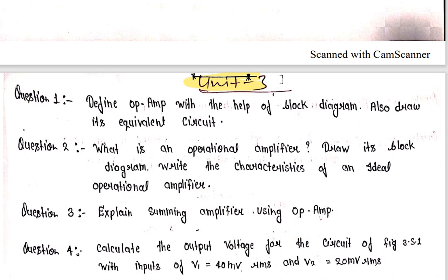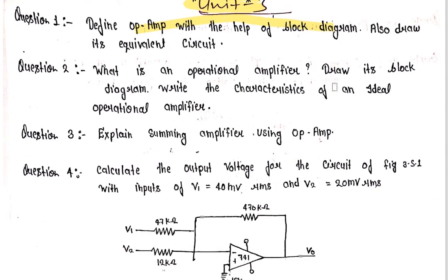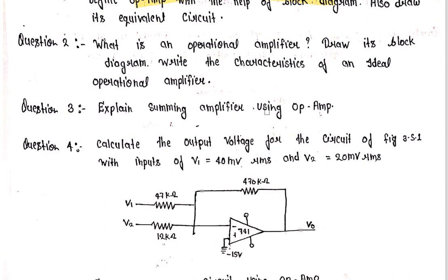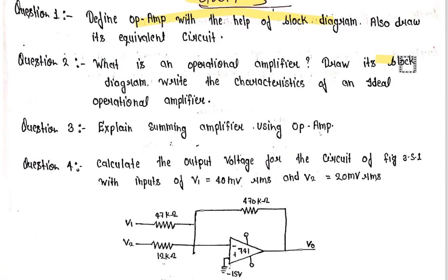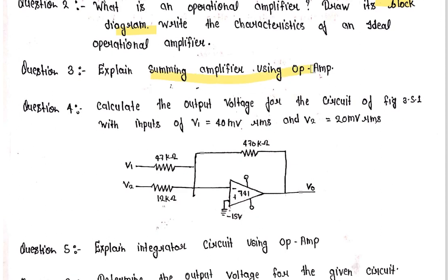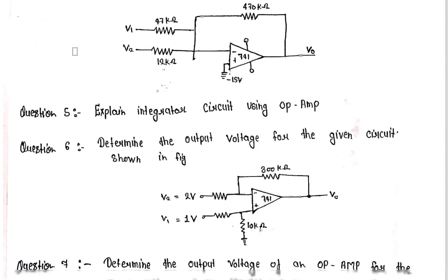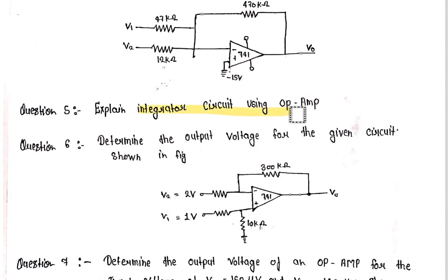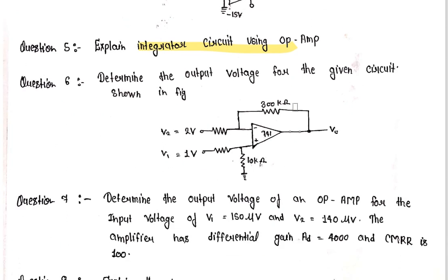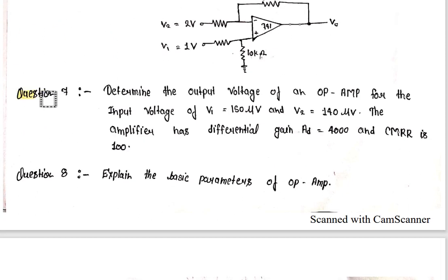Moving to Unit number three: Operational Amplifiers. First, study the block diagram of operational amplifier — understand what an op-amp is. Study its characteristics, ideal operational amplifier characteristics, and also summing amplifier using op-amp. Question number 4 is a numerical on operation amplifier.